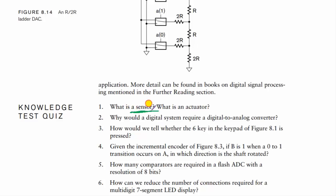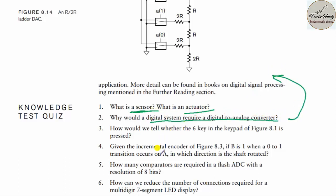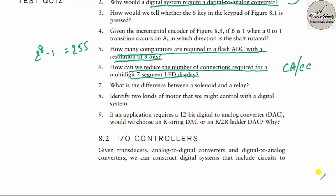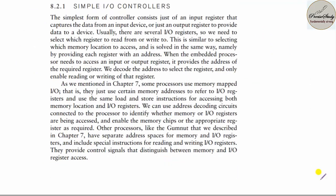What is a sensor? A sensor reads physical data and converts it to a readable form — examples include a thermometer or speedometer. What is actuation? It has been explained. Why does a digital system require a D/A converter? To convert digital data to analog. For a flash type A/D with 8-bit resolution, 2^N − 1 = 255 comparators are required. To reduce connections for a multi-digit 7-segment display, use common anode or common cathode configuration, and overcome flickering noise. What is the difference between a solenoid and a relay?